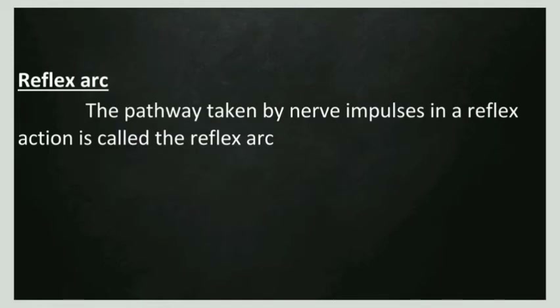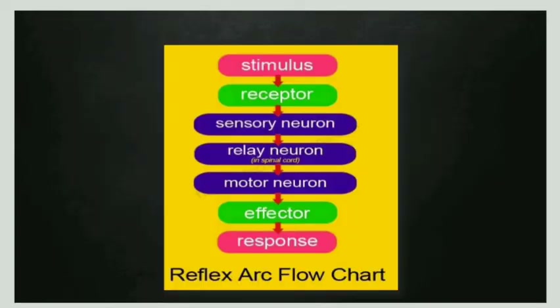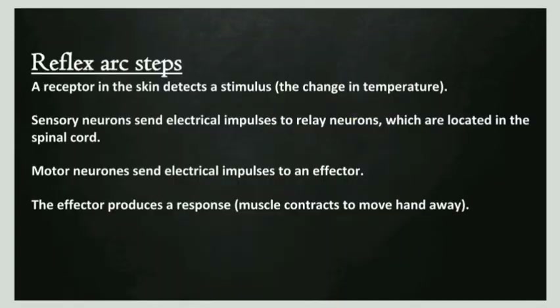Reflex arc: the pathway taken by nerve impulses in a reflex action is called the reflex arc. Steps of the reflex arc: a receptor in the skin detects a stimulus — the change in temperature. Sensory neurons send electrical impulses to relay neurons located in the spinal cord. Motor neurons send electrical impulses to an effector. The effector produces a response — that is, the muscle contracts to move the hand away.